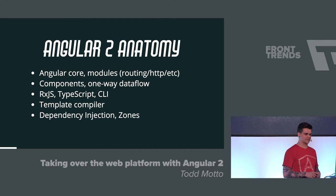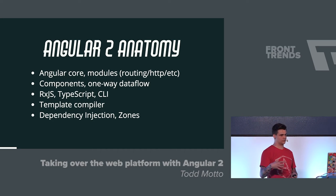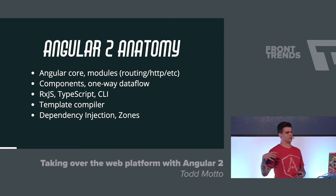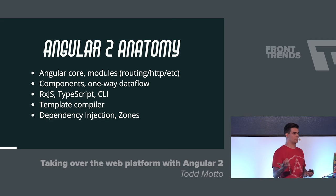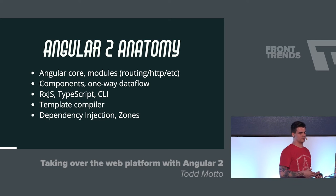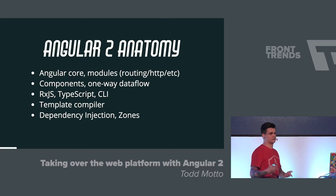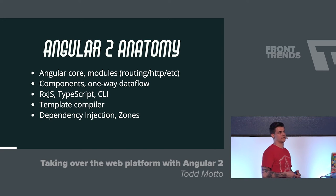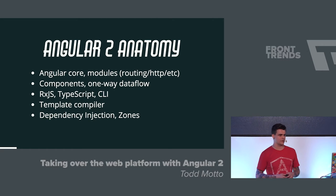Dependency injection and zones — we're not going to touch these deeply, but they're two of the main pieces of Angular. Zones are how Angular does change detection. Dependency injection is asking for a dependency — if you're a back-end programmer, it'll be familiar. In Angular 1, if you have a controller, you can ask for a scope object, for example.